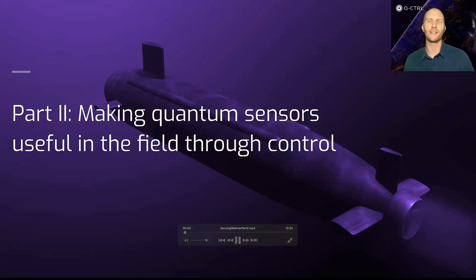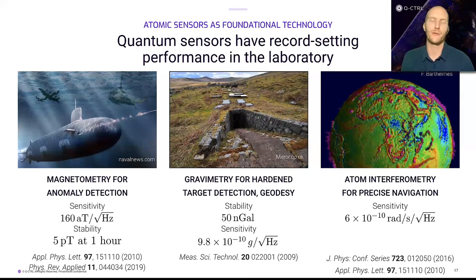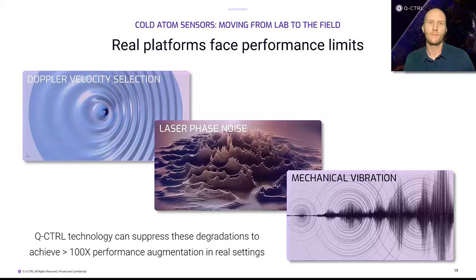Quantum control is essential for realizing the true potential of quantum atomic sensors. All quantum sensors come from laboratory research, where they hold records for sensing magnetic and gravitational fields and are stable over really long periods of time. Were we able to harness this sensitivity and stability outside the lab, we could detect smaller magnetic anomalies from greater distances and navigate more precisely and reliably. However, there are severe challenges in achieving record-setting performance out of the lab in realistic environments and with small form factors.